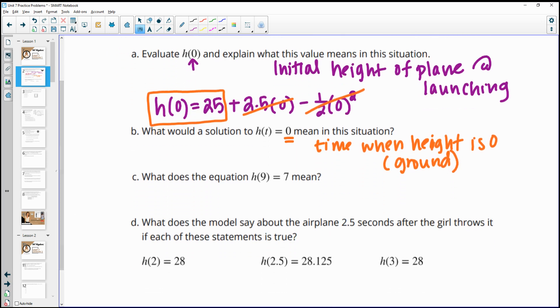Part C, what does the equation h of nine equals seven mean? So this one is giving us a time value and a height. This one is saying after nine seconds, the plane's height is seven feet.